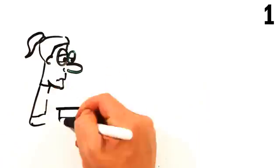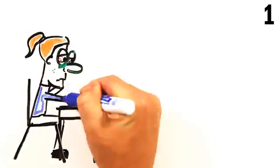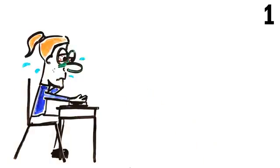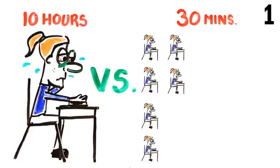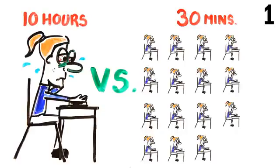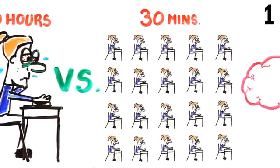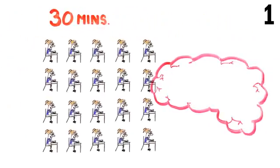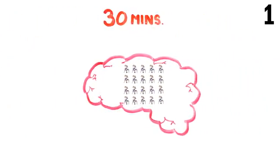First up, research shows that study sessions are most effective in small, short chunks. Instead of cramming in a 10-hour study session, it's much more effective to spread it out into 20, 30-minute sessions over a few weeks. This is because your brain is better at encoding information into the synapses in short, repeated sessions as opposed to one large one.